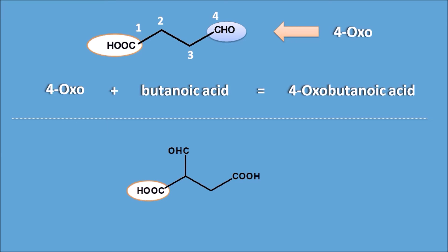In the next example, three functional groups are present: two carboxylic acid groups and one aldehyde. Again, preference is given to the carboxylic acid. We start numbering from the direction that gives the least locant position to the aldehyde: one, two, three, and four. Numbering from the other direction would give the aldehyde group the third position, which is not preferred.